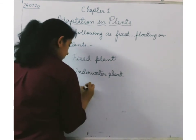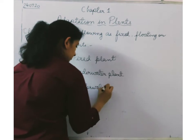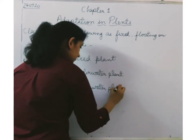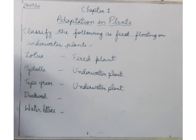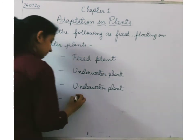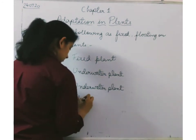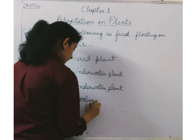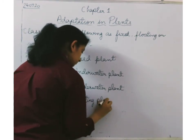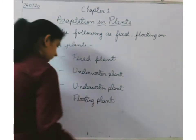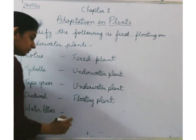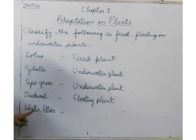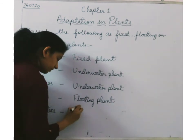The next one is duckweed. Duckweed is a floating plant. And when we talk about water lettuce, I have drawn it in the diagram also. Water lettuce is a floating plant again.